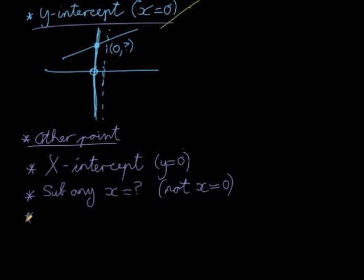Or finally, we can use the gradient. Now the gradient is the value a, the one in front of the x. This gradient can be expressed as a numerator over a denominator.